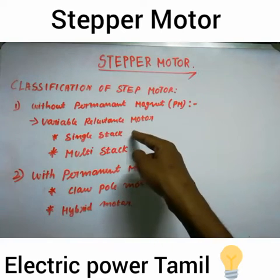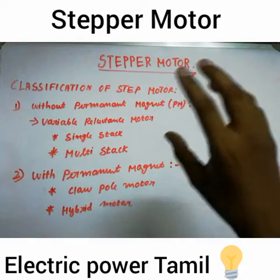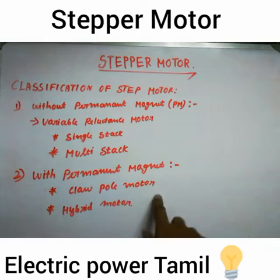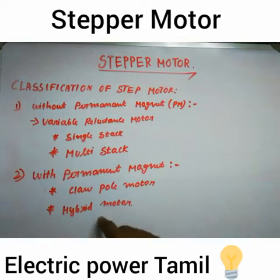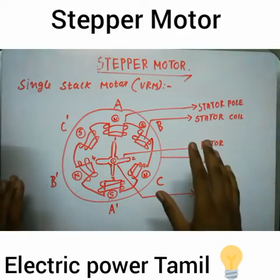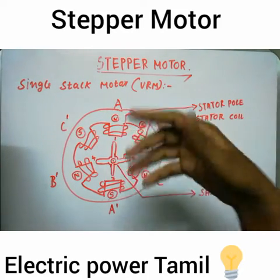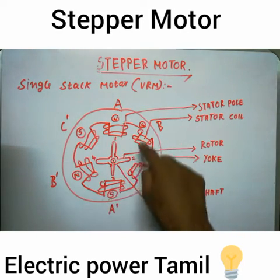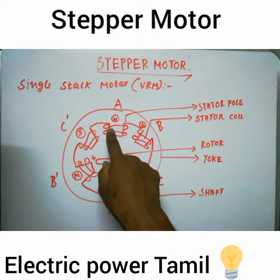There are two general types: the clap-pole motor and the hybrid motor. The hybrid motor combines with and without permanent magnet. For the variable reluctance motor, we have the single stack motor. The outer part is the stator and the inner part is the rotor.